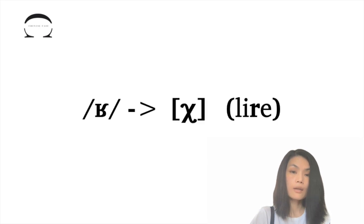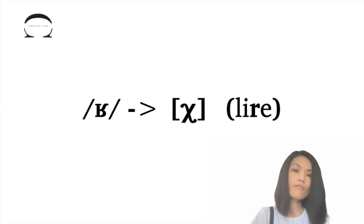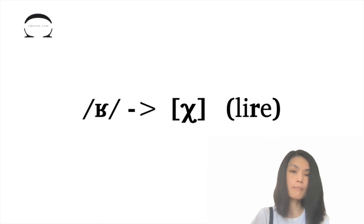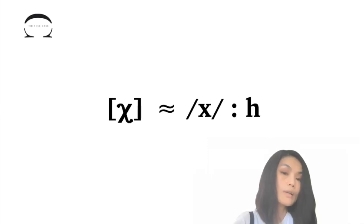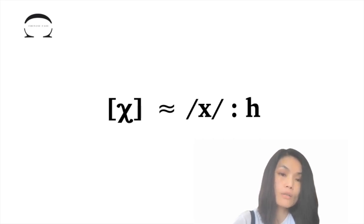When it comes before vowels at the end of a word, it can lose its vibration, and its voiceless counterpart is represented by this IPA symbol. Look how similar these two symbols already are. The difference is the point of articulation.